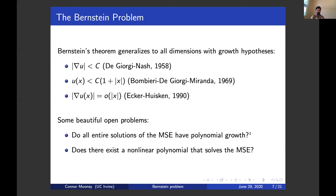One could think what one wants to do is take a global solution and try to infer information about it from its tangent cone at infinity. But this is quite difficult because we don't know in general that this tangent cone is unique. Another question one could ask is: does there exist a non-linear polynomial that solves the minimal surface equation? This question has a more algebraic nature — in a million dimensions, can you construct some crazy polynomial that solves the minimal surface equation? Honestly, I've got no idea, but it seems like a very interesting problem.